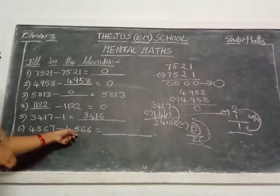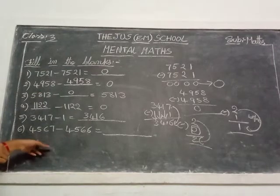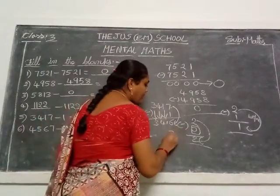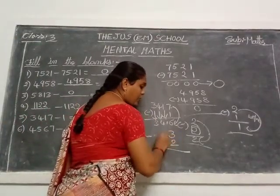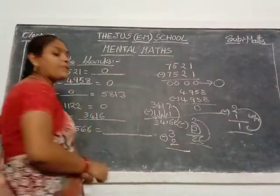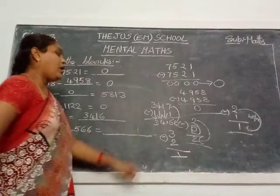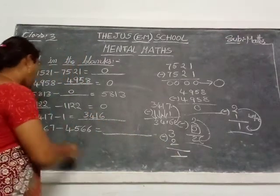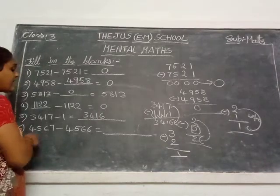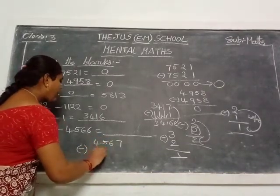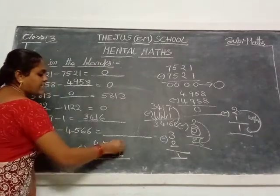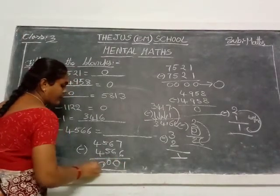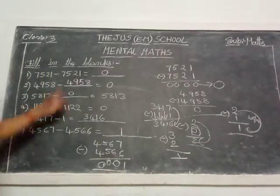Next: 4567 minus 4566. Any number subtracted from its predecessor before number gives 1. Take 3 fingers, close 2 fingers, remaining 1. So any number minus its predecessor becomes the answer 1. Here: 4567 minus 4566 — take 7 fingers, close 6 fingers, remaining 1. So the difference is only 1. Okay children, these are the ranking facts.